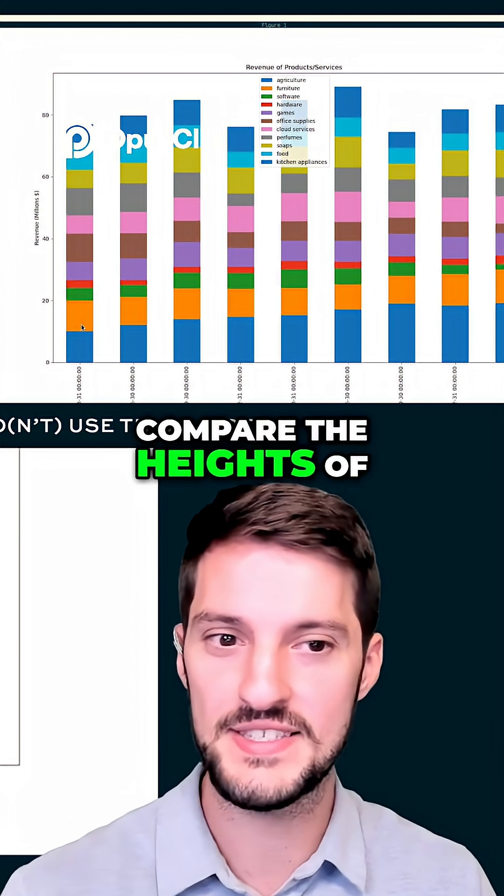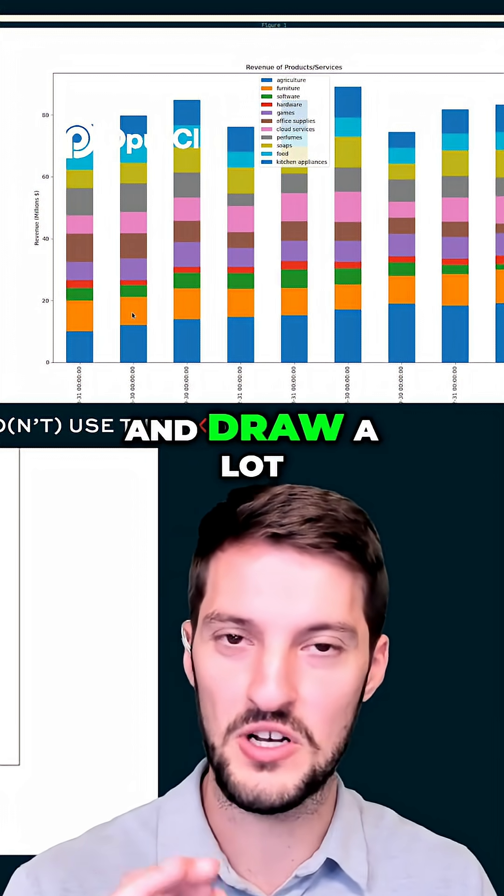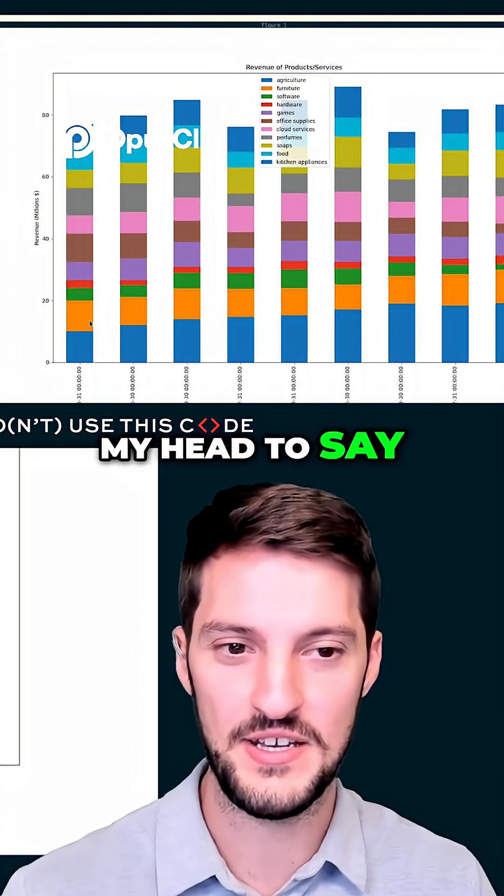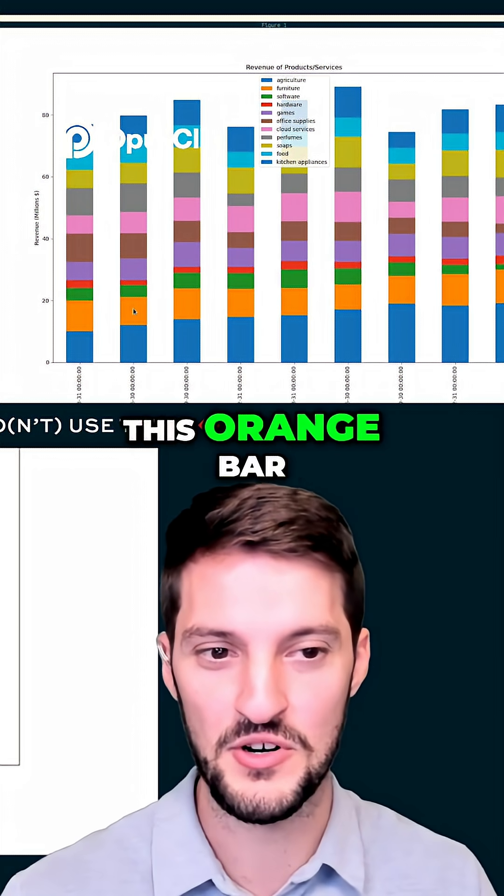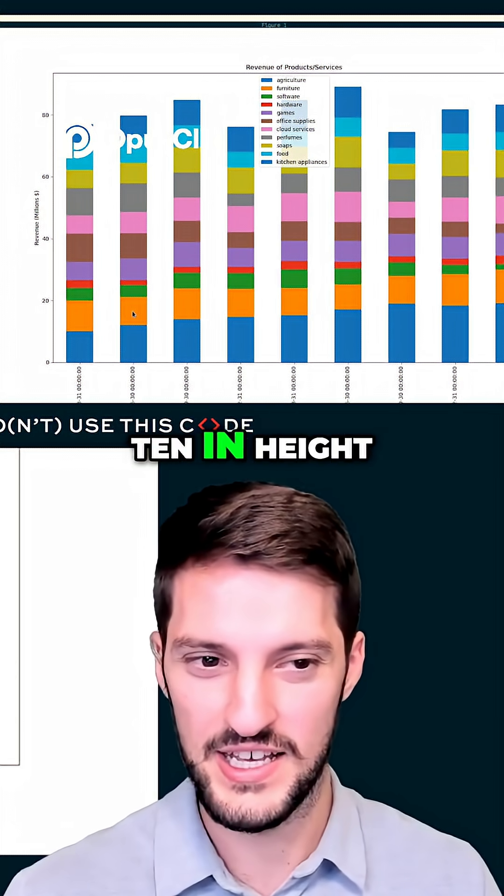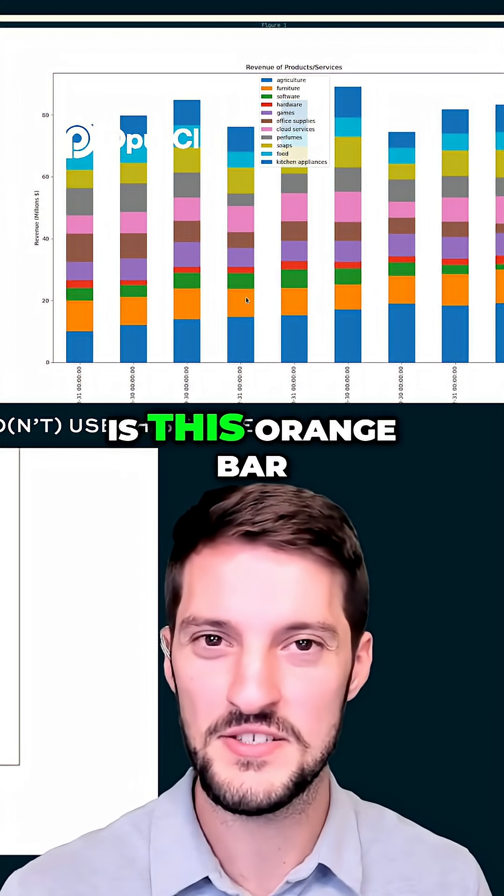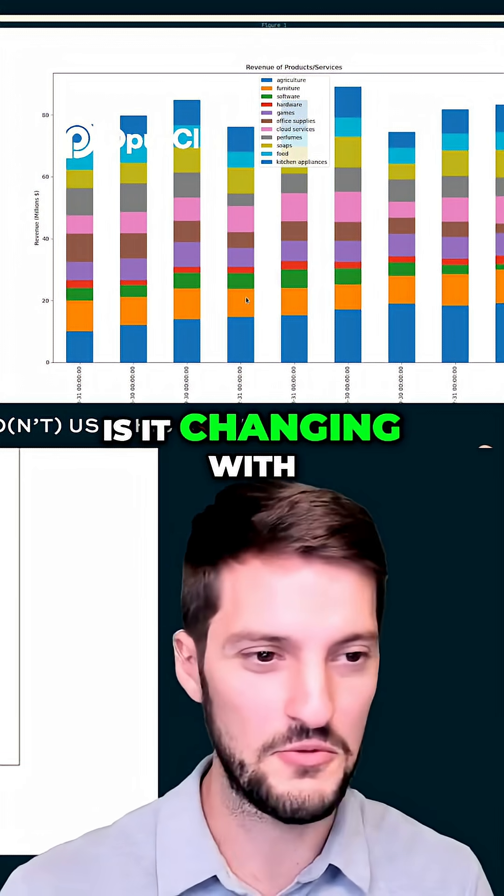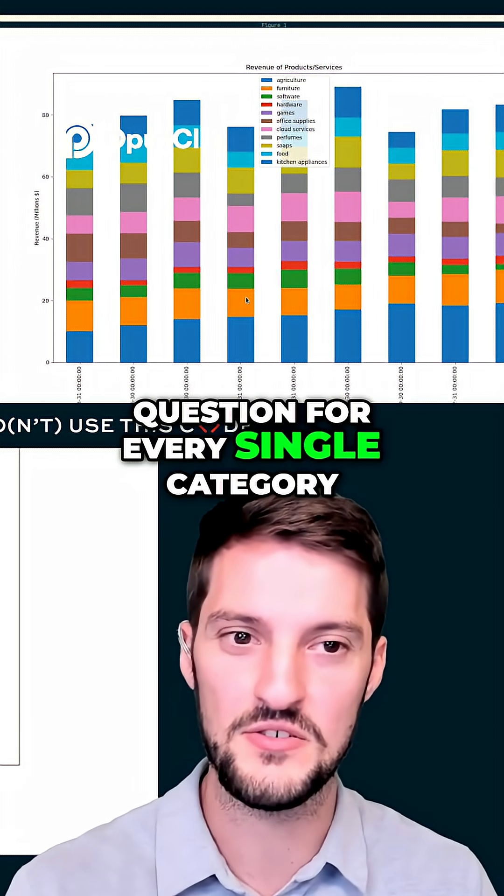If I want to compare the heights of these orange bars to each other, I have to squint and draw a lot of parallel lines in my head to say, okay, this orange bar is about 10 in height, this orange bar is about 10 in height. I keep going all the way down thinking, is this orange bar changing with respect to our x-axis? And you have this question for every single category.